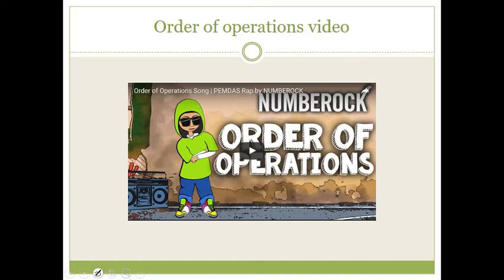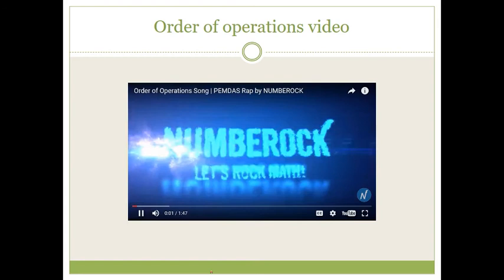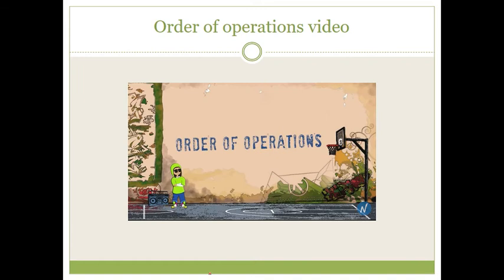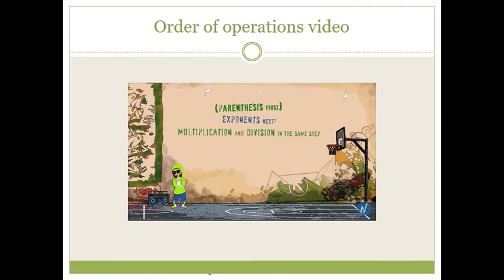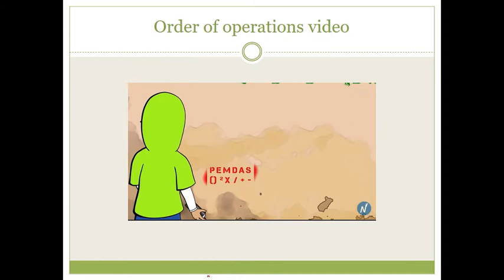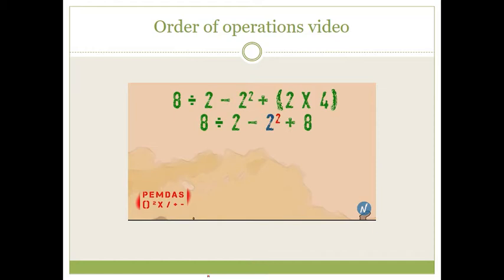Here's a quick video to remind you of the order of operations. Parentheses first, exponents next, multiplication and division in the same step, addition and subtraction — if you've got the nerve, from left to right, first come first serve. Parentheses first: 2 times 4, the product's 8. Exponents next: 2 squared is 4. Time to divide or multiply — divide 8 by 2, the quotient's 4. Finally, time to add or subtract — 8 is the answer and that's a fact.